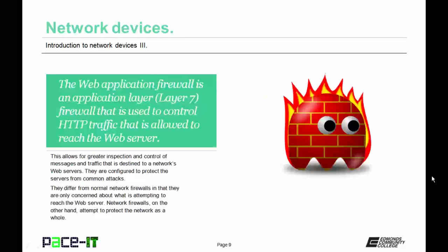Wireshark is a common protocol analyzer that is often used, and better yet, it's free. The web application firewall is an application layer, or layer 7, firewall that is used to control HTTP traffic that is allowed to reach the web server. This allows for greater inspection and control of messages and traffic destined to a network's web servers. They are configured to protect the servers from common attacks, and they differ from normal network firewalls in that they are only concerned about what is attempting to reach the web server, while network firewalls attempt to protect the network as a whole.